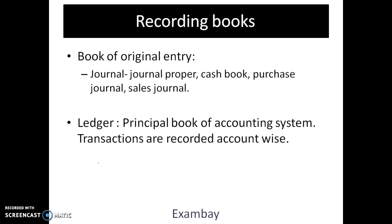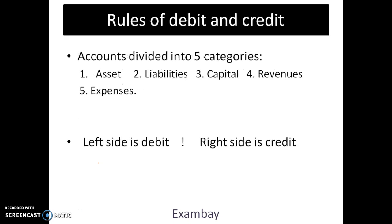Then we have the ledger. This is the principal book of the accounting system. It contains different accounts where transactions related to each account are recorded — all financial decisions are made according to this book, and we prepare the balance sheet at the end of the year from the ledger. Accounts are divided into five categories: assets, liabilities, capital, revenue, and expenses. Also, when we prepare the ledger or any transaction registers, we put debit on the left side and credit on the right side.